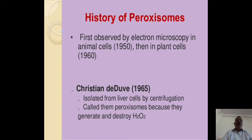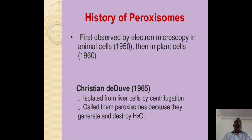Today I am going to speak about the history of paroxysome. First we see that history of paroxysome: it was first observed by electron microscopy in animals in 1950, then implantation in 1960. Christian D. Dwey in 1965 isolated them from the liver cells by centrifugation and called them paroxysome, because they generate and destroy H2O2.